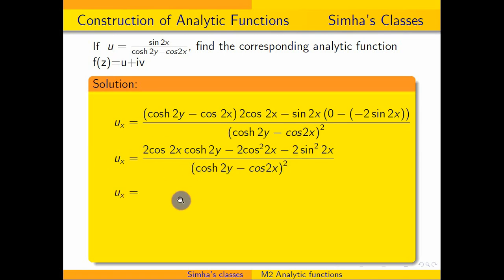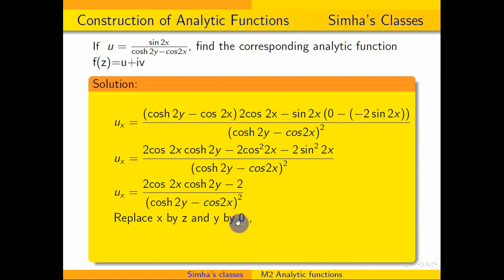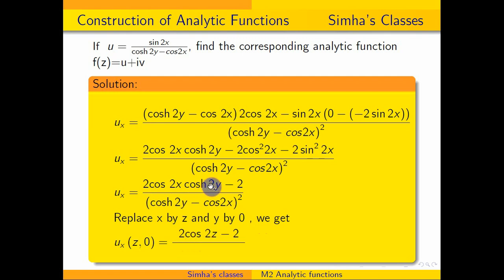Taking minus 2 outside, this becomes cos² 2x plus sin² 2x. That value is 1. So 1 into minus 2 gives minus 2, divided by the denominator squared. Now replacing x by z and y by 0, we get: ux(z, 0) equals 2 cos 2z — with the cosh 2y value at y equals 0 being 1 — so the result is minus 2 divided by (1 minus cos 2z) squared.